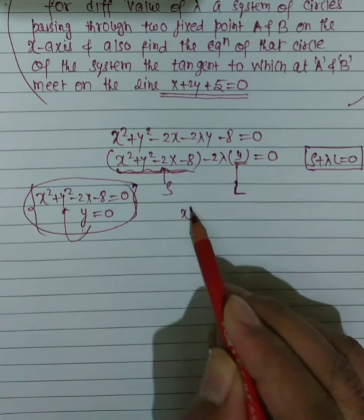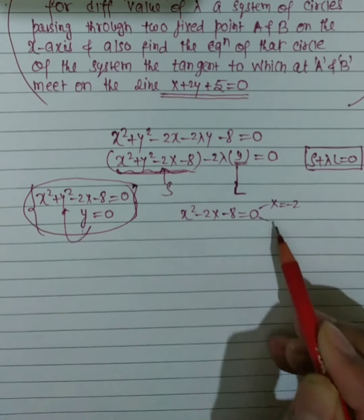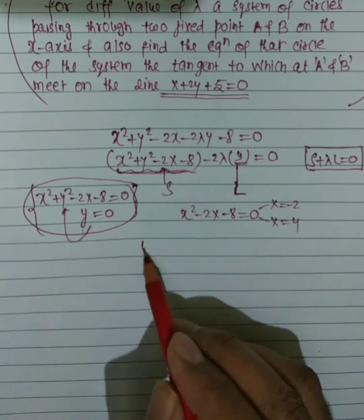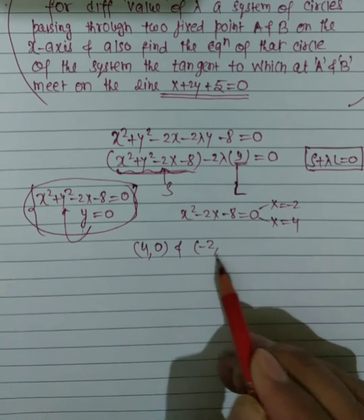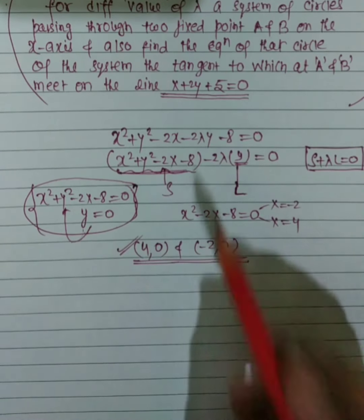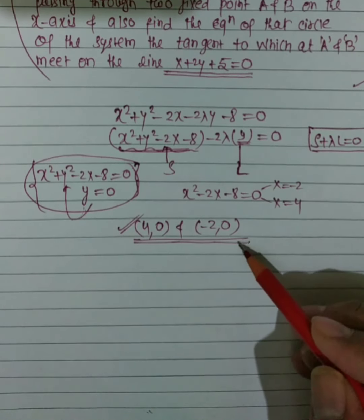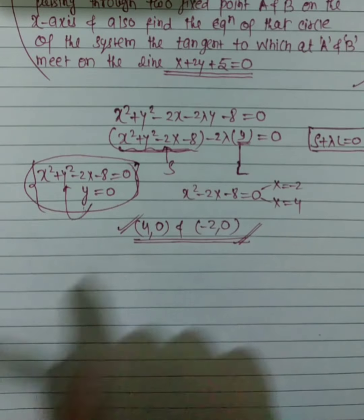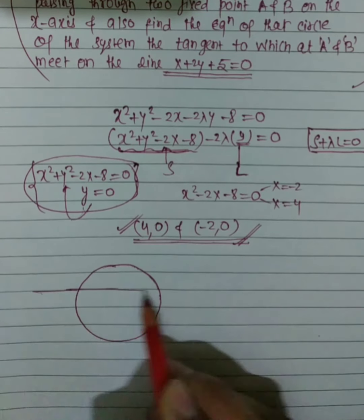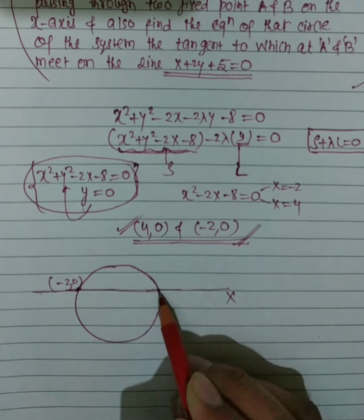Putting y = 0, the equation reduces to x² − 2x − 8 = 0. Solving this gives the two fixed points A and B on the x-axis, which all circles in the family pass through regardless of the value of lambda. This completes the first part, which is the proof.